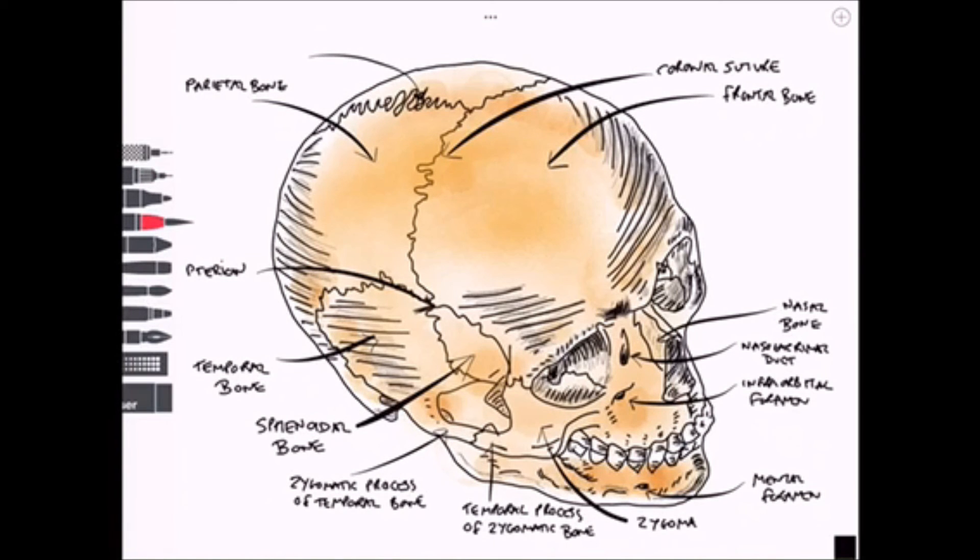At the very top we can label on another suture. This is the sagittal suture and right in the middle we've got the bregma. This is often important in stereotactic surgery. Finally we can put the external auditory meatus on. This is the external opening of the ear. We can label the mastoid process and that completes our diagram and quick review of the skull.